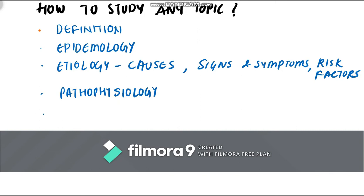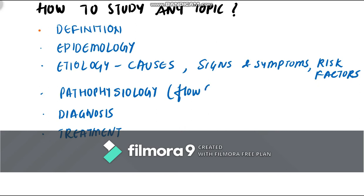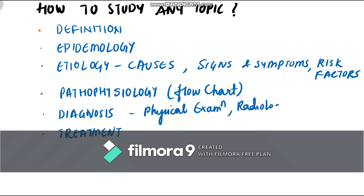For pathophysiology, writing it in a flowchart format is really effective. For diagnosis, covering three sections — physical examination, radiology, and non-radiology — means no one will reduce your marks.